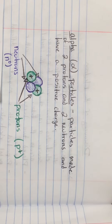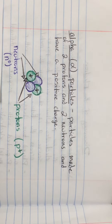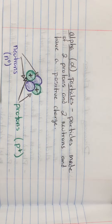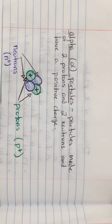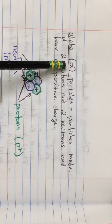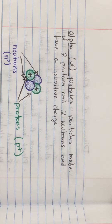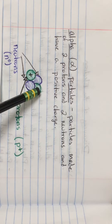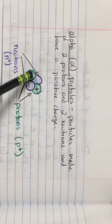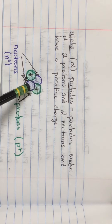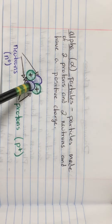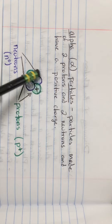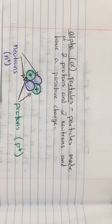An alpha particle is a particle made of two protons and two neutrons that has a positive charge. The symbol you see here is the Greek letter alpha. You see two protons — those are the positive spheres — bound to two neutrons, which have no charge. So overall the alpha particle is positive.